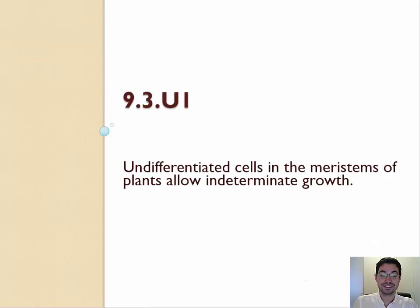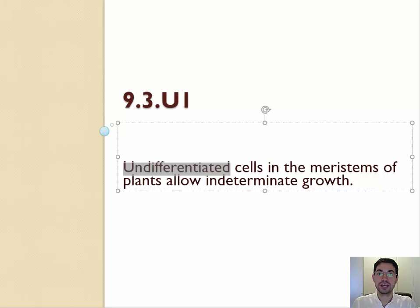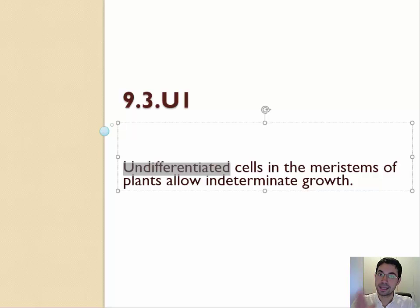Undifferentiated cells in the meristems of plants allow indeterminate growth. Where was the last time we heard about undifferentiated cells that can differentiate and can divide? Stem cells. So these are basically stem cells in the plant.